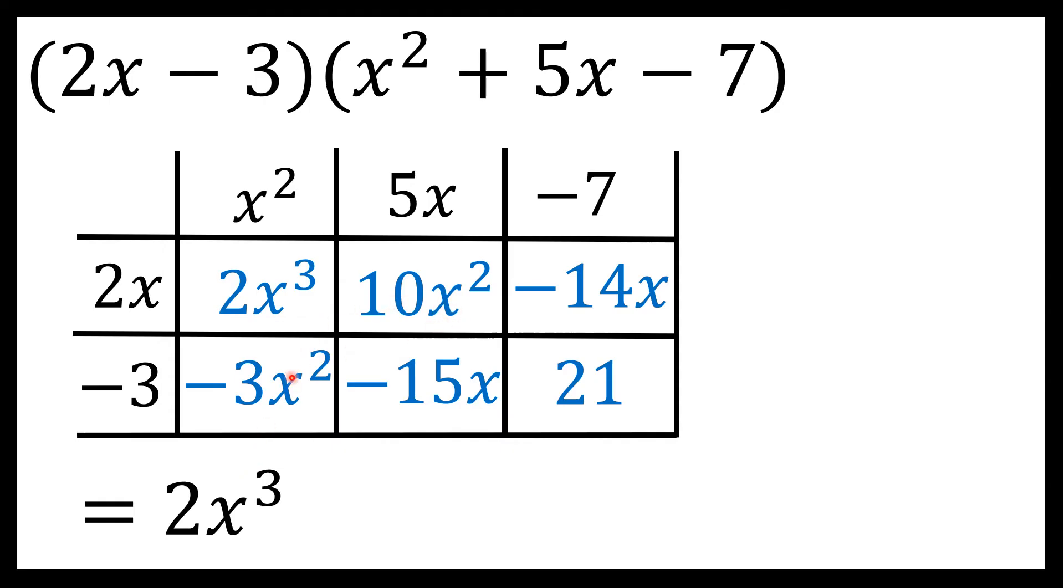Now, I do see two terms that have an x to the second power. These two terms each have an x to the second power. So I'm going to combine those like terms, negative 3x to the second plus 10x to the second is positive 7x to the second. That's the second term in my final answer.